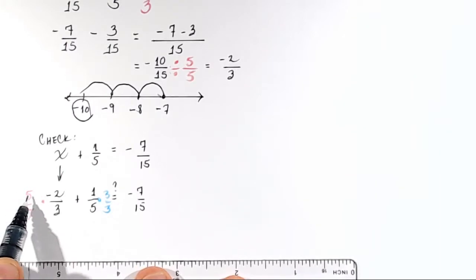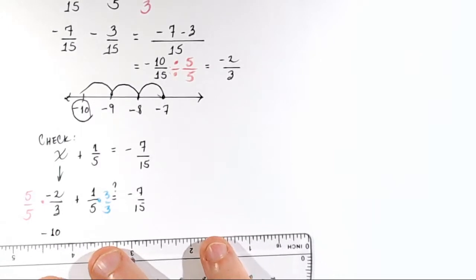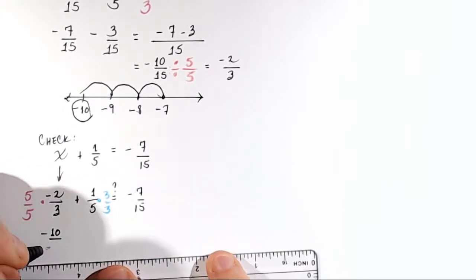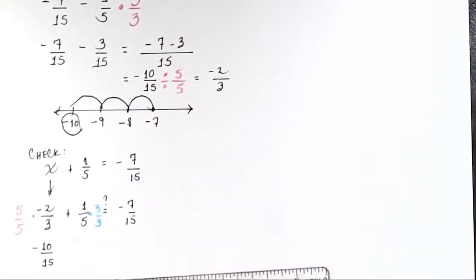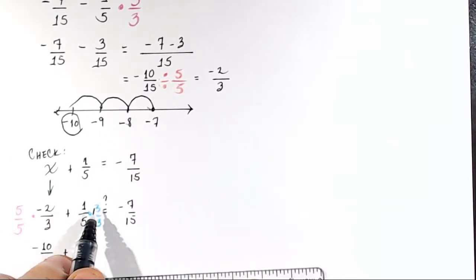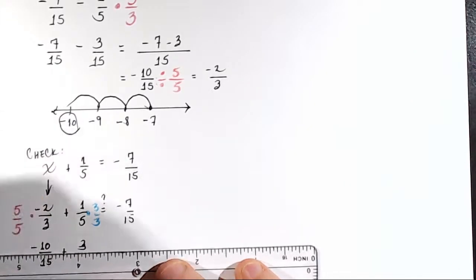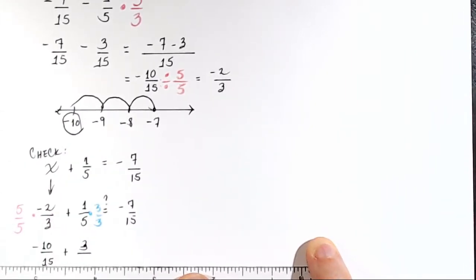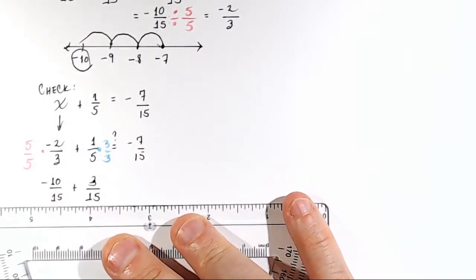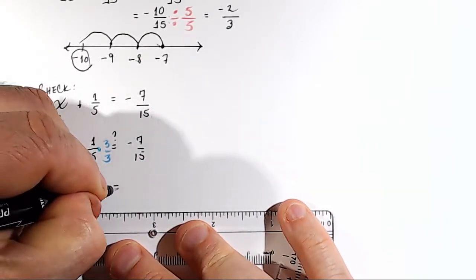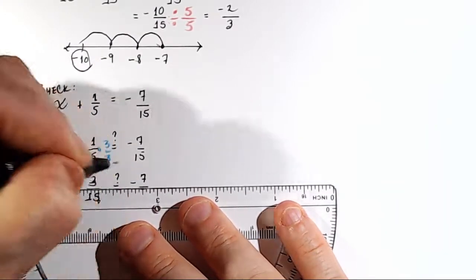So we'll simplify here. 5 times negative 2 is negative 10 over 5 times 3, which is 15. And now I will add 1 times 3, which is 3, over 5 times 3, which is 15. And what we want to know is, does that equal negative 7 over 15?